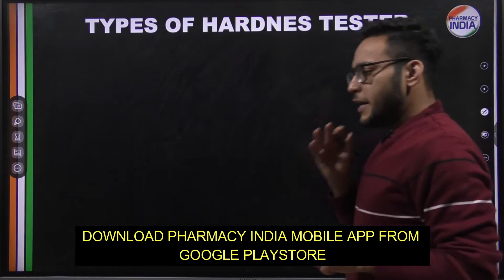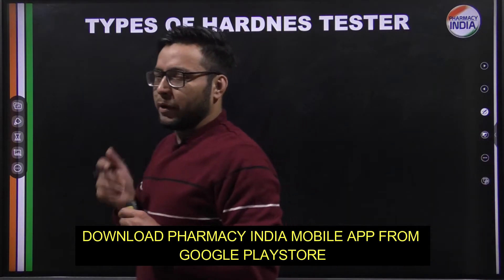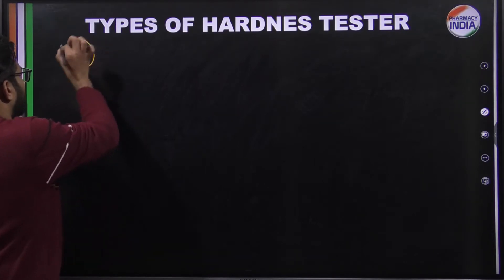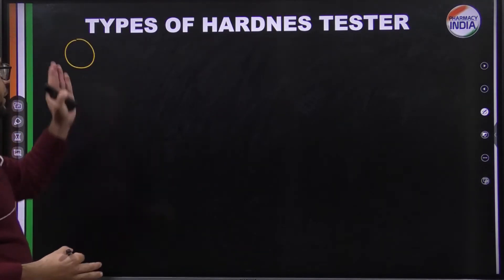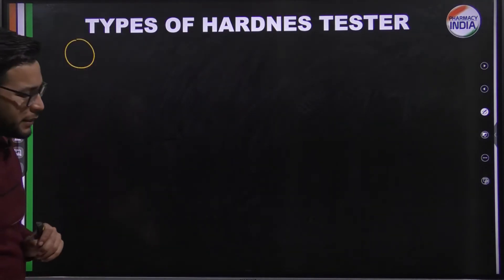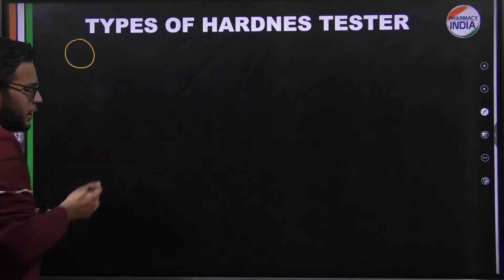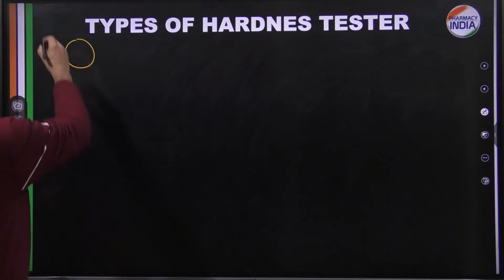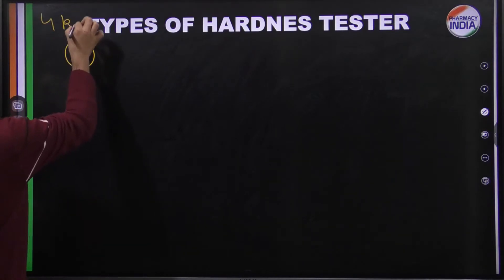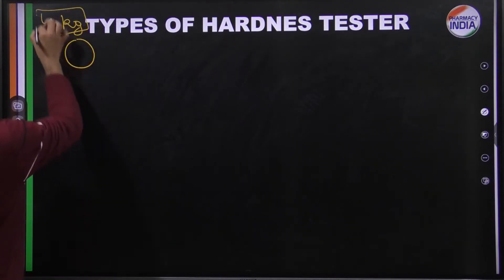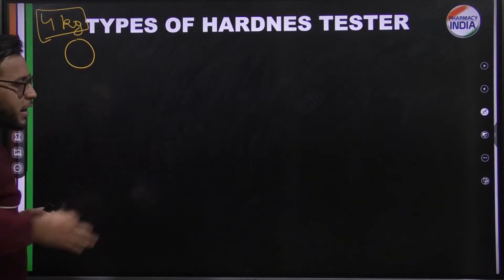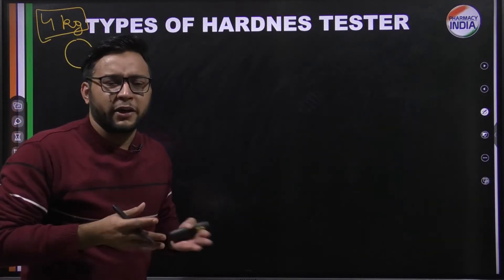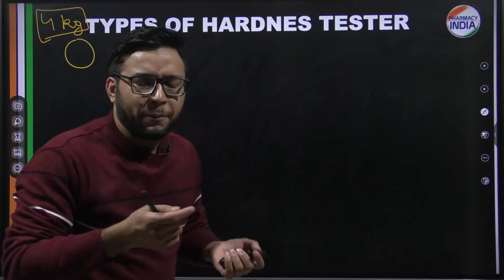Hardness testers are used in tablet formulation. When we make tablets, their hardness is tested. The reason is simple — a particular standard hardness is required, which is 4 kg. Yes, 4 kg is the standard hardness for a tablet. So why do we check hardness?